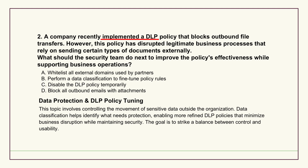Four potential fixes are offered. One: whitelist all external domains they work with — but what if a partner gets compromised? Two: temporarily disable the DLP policy altogether, which kind of defeats the purpose. Three: block all outbound emails that have attachments — a sledgehammer approach that would cripple communication for most places.